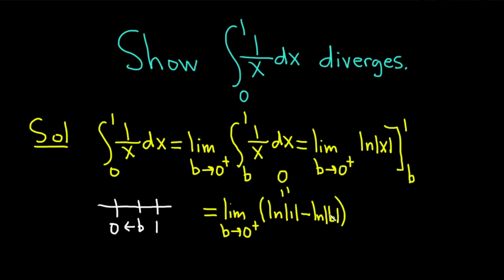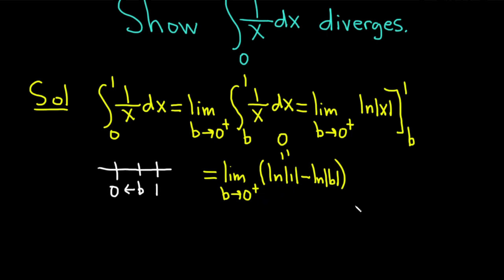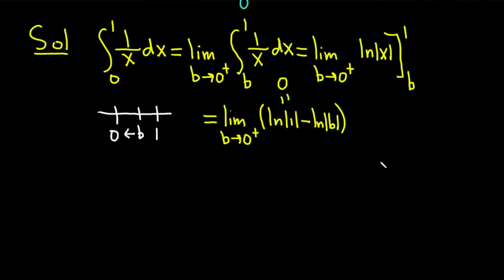What happens here is that the natural log of 1 is 0, and the natural log of b is going to approach negative infinity as b approaches 0 from the right. Let me explain that, because that's really important to understand. So here's the y-axis, and here's the x-axis. The natural log of x has a vertical asymptote at x equals 0, and its graph looks roughly like this.